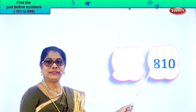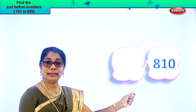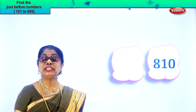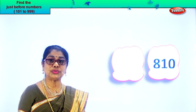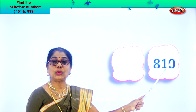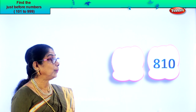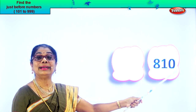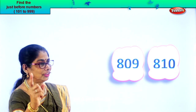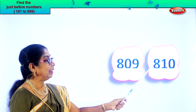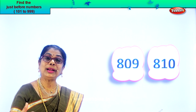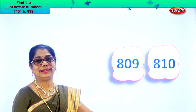Here we have eight hundred and ten. Eight in the hundreds place, one in the tens, and zero in the ones place. Now, in the ones place you have zero, so let's take the two numbers together. In the tens place you have one — that is ten. One less than ten is nine. So it is ten here, then nine. If nine comes here, there will be zero here. The number before is eight hundred and nine. Eight hundred and nine, eight hundred and ten. When the ones place is zero, take the ones and tens place together, subtract one, and you get the number before.